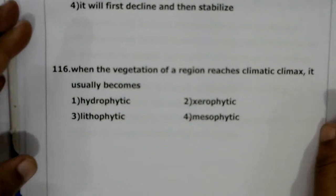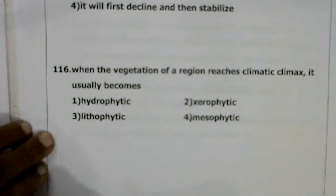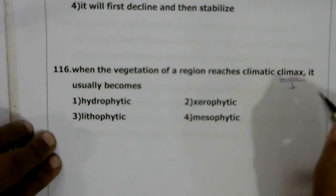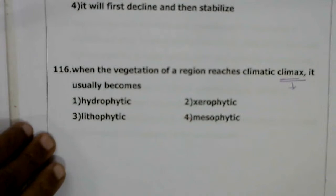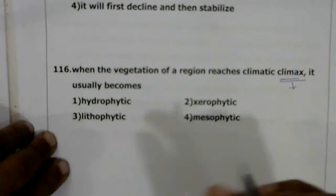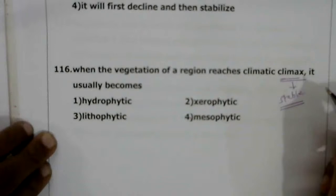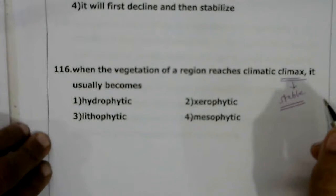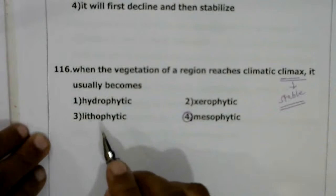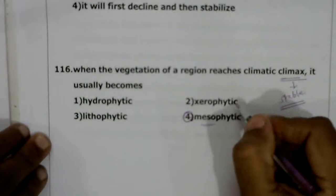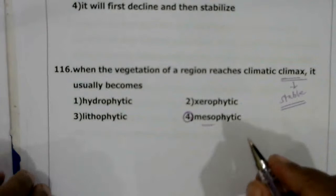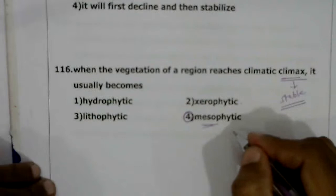Next question: when the vegetation of a region reaches the climatic climax, it usually becomes — ? This question is based on succession. The climax community is a stable community. In both hydrosere and xerosere, succession leads to a mesophytic climax community. Wetlands are converted to mesic conditions, and dry lands/rocks are also converted to mesophytic conditions. The climax community is always mesophytic.